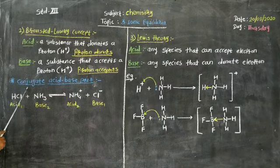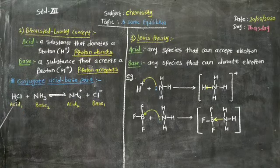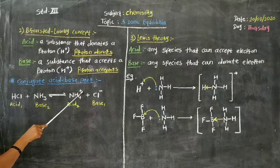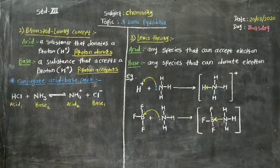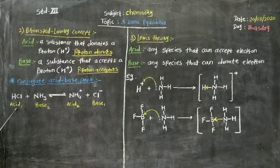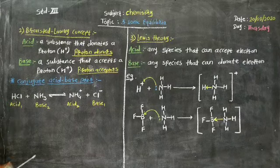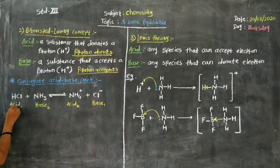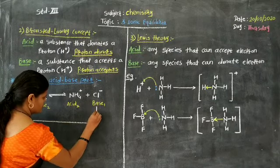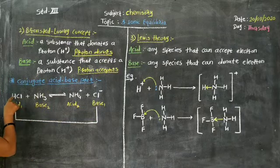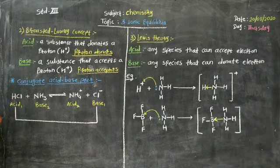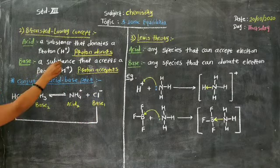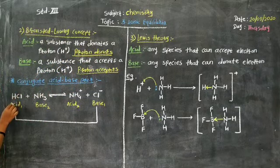Let us consider the conjugate acid-base pair. Consider the reaction: HCl + NH3 at equilibrium gives NH4+ plus Cl−. HCl is a strong acid. HCl is converted into Cl− by loss of a proton — when we remove H+ from HCl, it gets converted into Cl−. Proton is donated, and proton donors are acids according to the Bronsted-Lowry concept. Therefore, HCl is an acid here.